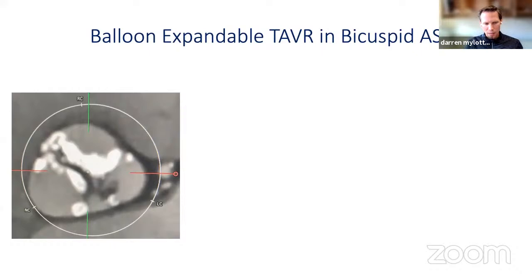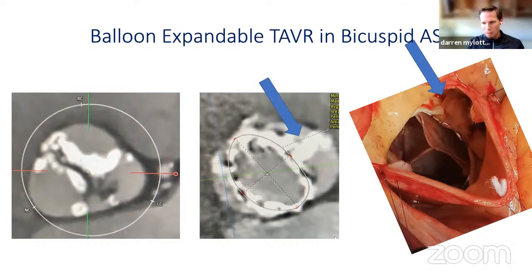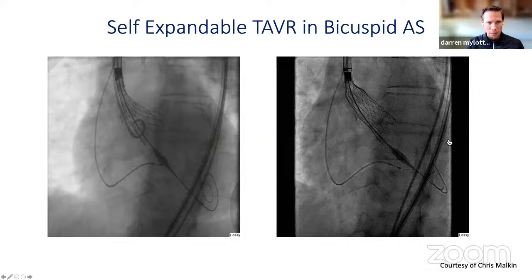Here's one we had a couple of weeks ago in Galway — a severely calcified bicuspid Sievers type 1 valve with a raphae between the left and right. This is the post-implant view. You'll notice it looks like a self-expanding valve, but it's actually a Sapien 3 that was put in a couple of millimeters too low, so there was not enough force to open up the raphae. You can see from these arrows the piece of calcium seen on the post-operative specimen, and the patient had severe transvalvular leak.